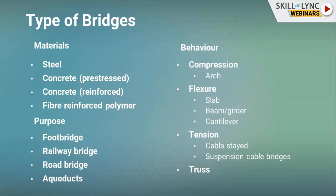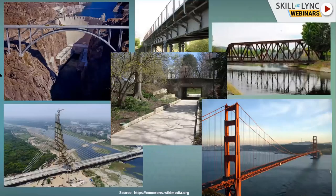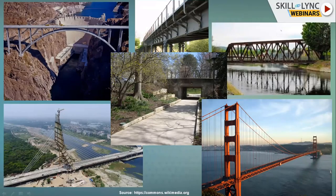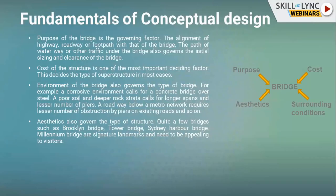The images shown include an arch bridge, a steel girder bridge, a simple culvert (slab bridge), a truss bridge, the Golden Gate Bridge (a suspension cable bridge), and the Signature Bridge in Delhi, which is a cable-stay bridge.